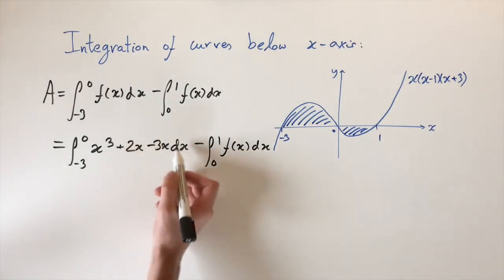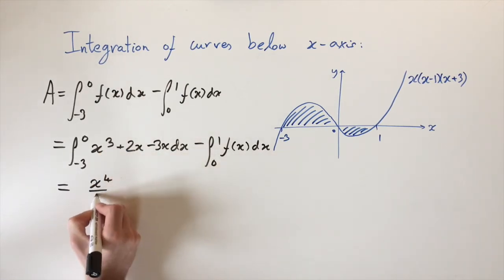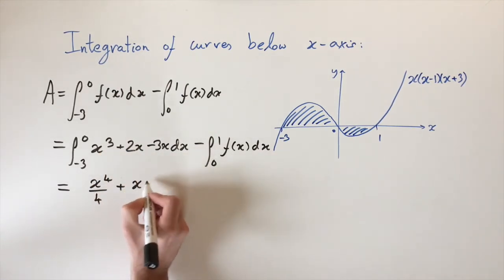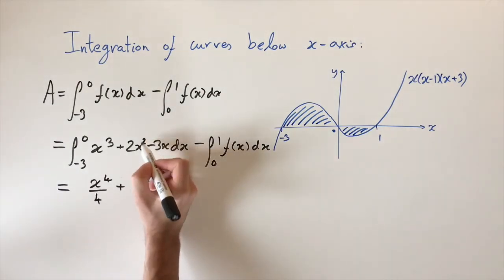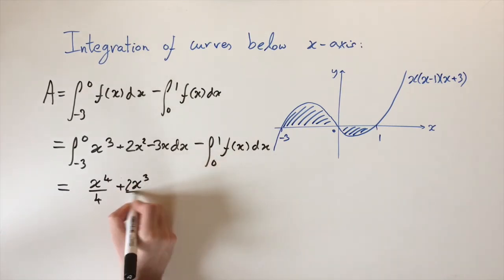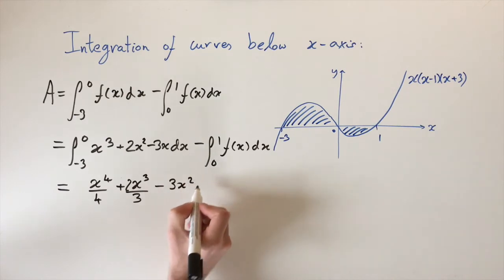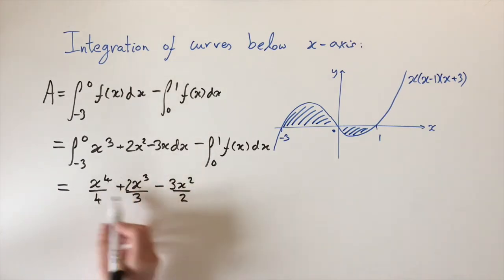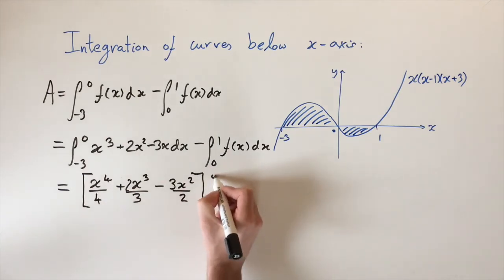And then it's just a matter of integrating these terms term by term. So I'll just do this step: it's x to the 4 over 4 plus x squared. I've just realized this term should be an x squared here, so this would become 2x cubed divided by 3. And then this turns to 3x squared divided by 2. So this is f of x integrated, and then it's just a matter of evaluating the limits. So minus 3 and 0.